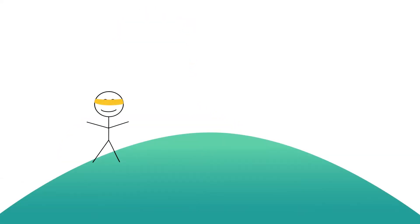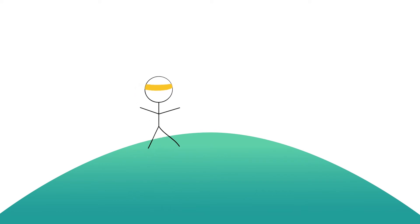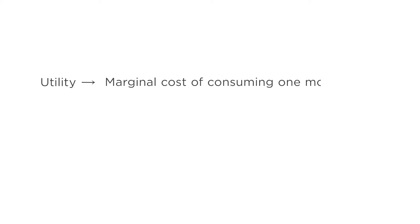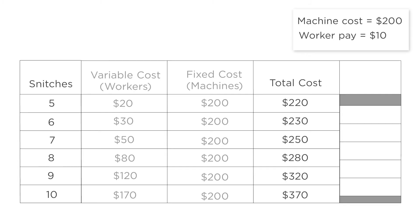To decide how many snitches to produce in order to maximize profit, the firm needs to know how its costs vary with output. The firm will want to play the same hill-climbing game we played earlier with the individual who wanted to maximize utility, and playing this game requires knowing the cost of the next step up the hill. With utility, we considered the marginal cost of consuming one more unit; with production, we'll focus on the marginal cost of producing one more unit. Producing five snitches costs $220. To produce one more snitch — six total — costs $230. The marginal cost of producing this extra snitch is $230 minus $220, or $10.